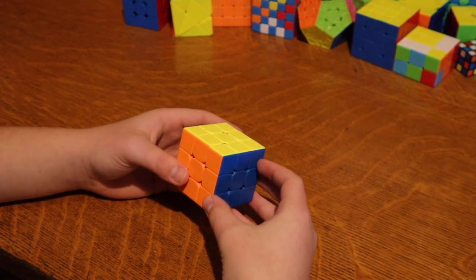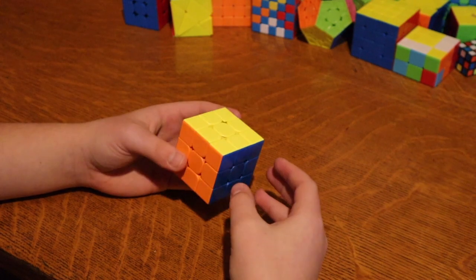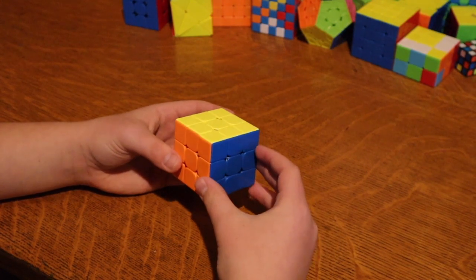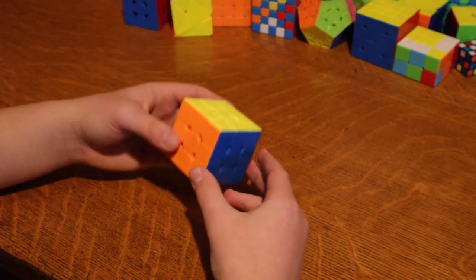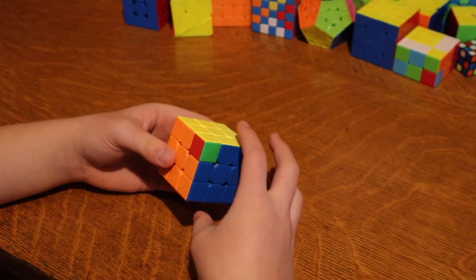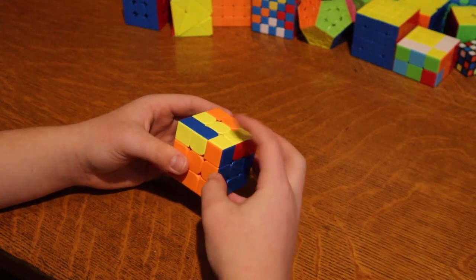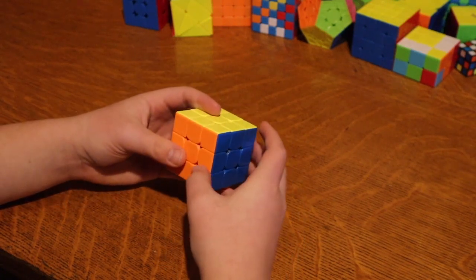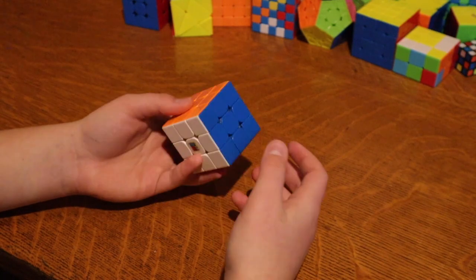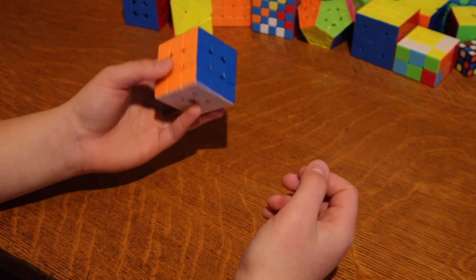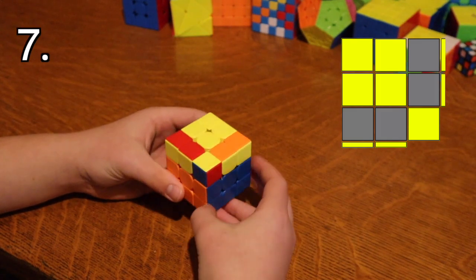So you'll know these next two cases if you know either Y or T perms. I'm not sure if you knew this, but those algorithms are basically just two OLL algorithms back to back. So if you watch closely, the first half of a Y perm is actually just an OLL case, and the second half solves it. So that means if you split Y perm in half, then you have two OLL cases that you know. So the first half of a Y perm solves this case right here.